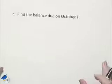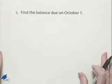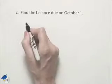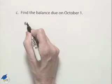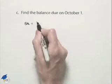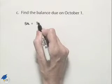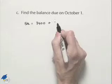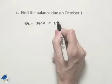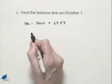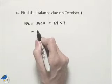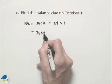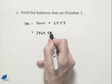Now let's find the balance due on October 1st. We take the balance from the end of the month, which was $3,400, and add to it our interest of $64.53, giving us a new balance of $3,464.53.